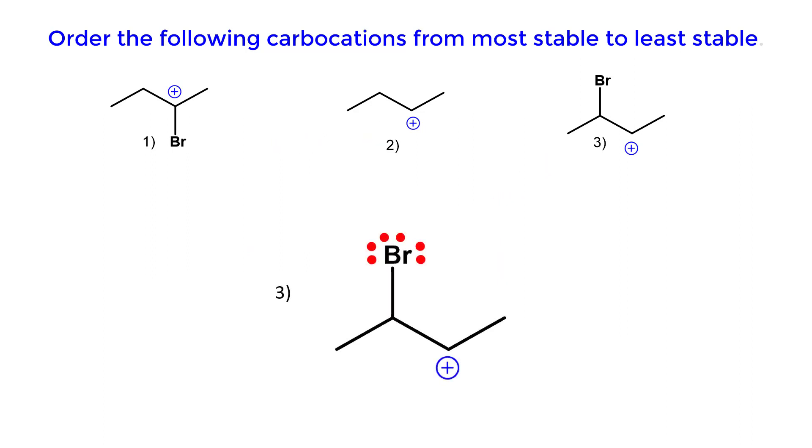For structure number three, the carbocation is adjacent to sp3 carbons, thus resonance with the bromine atom cannot occur.